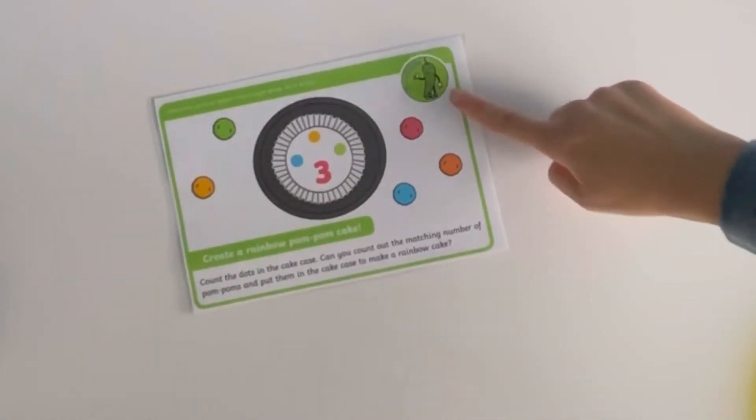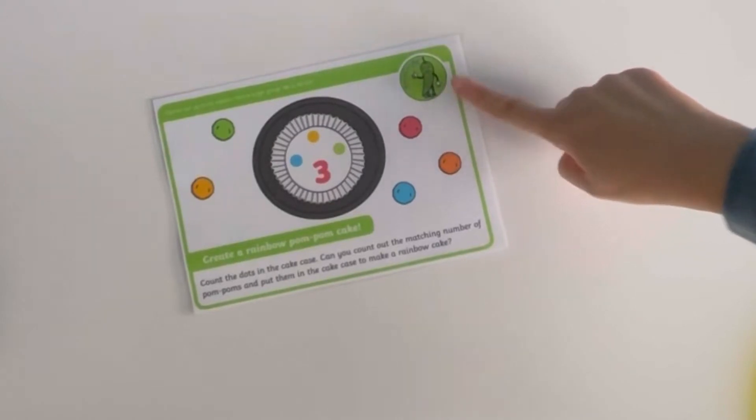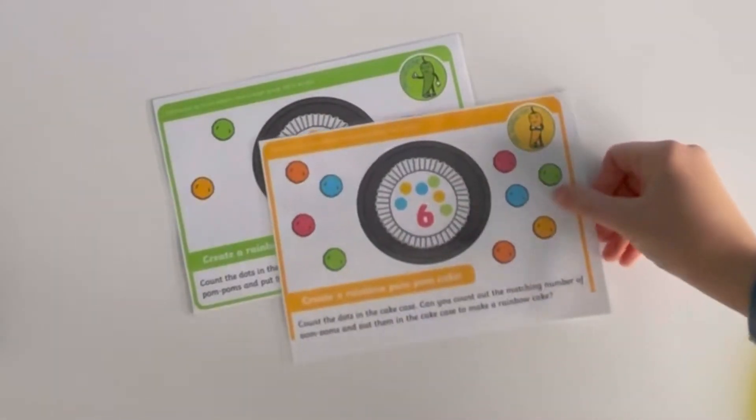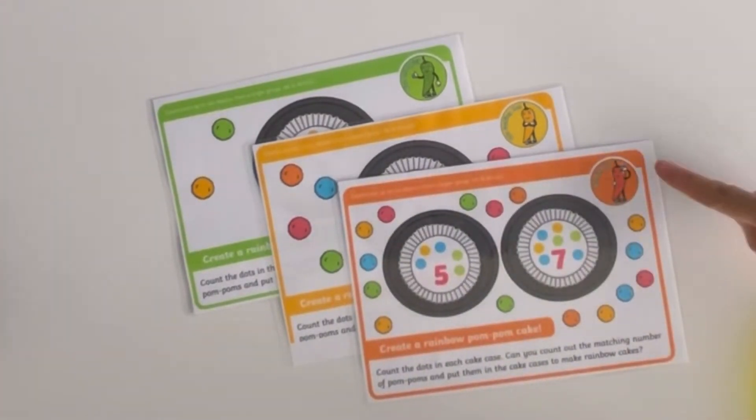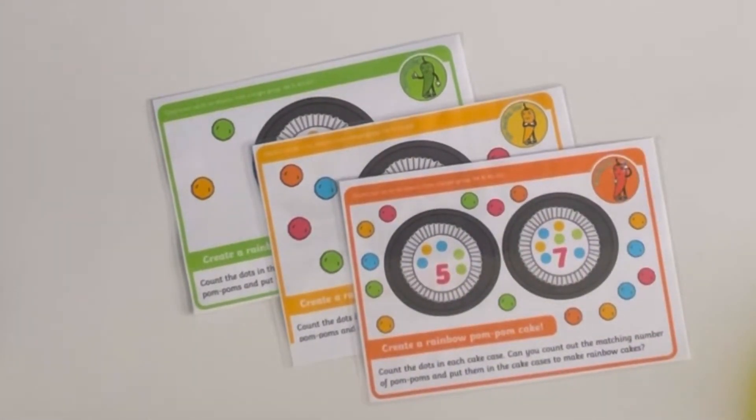Here we have some of our pom-pom rainbow cake activity cards. Take note of the chilli in the corner. You could try nice and spicy, it's getting hot, or if you're feeling really brave go for a burning up challenge card.